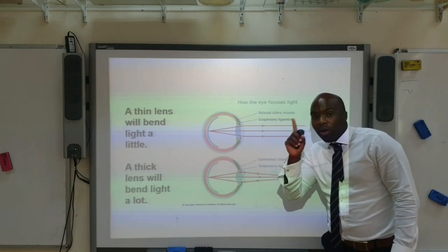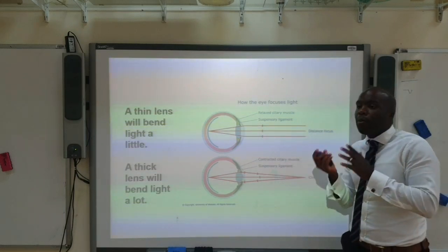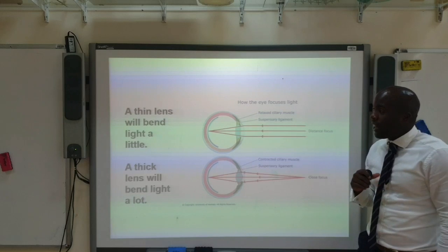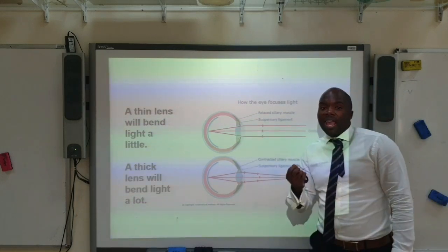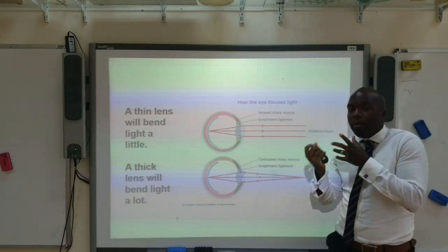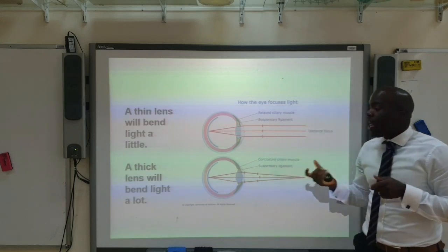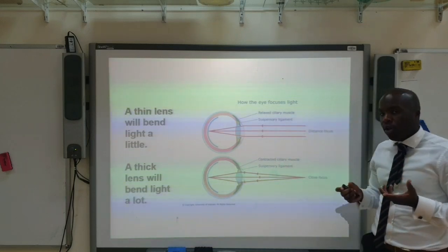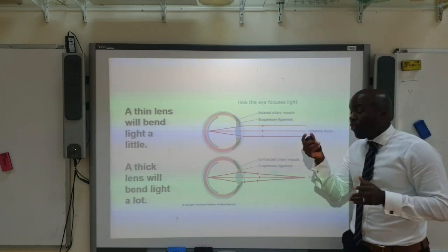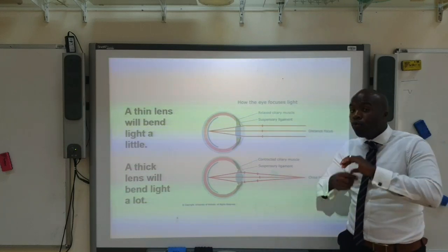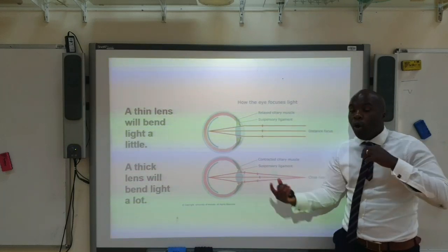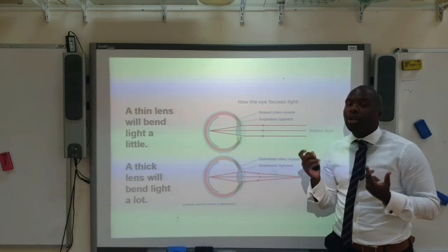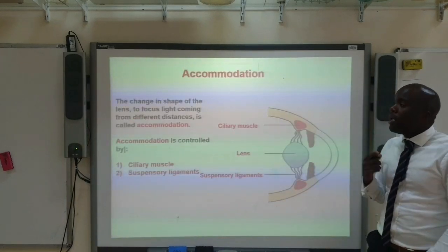Now, looking at the lens in terms of the bending of light: if the lens is thin, the light will be bent a little. The thicker the lens, the more refraction that happens. The thinner the lens, the less refraction that will happen.